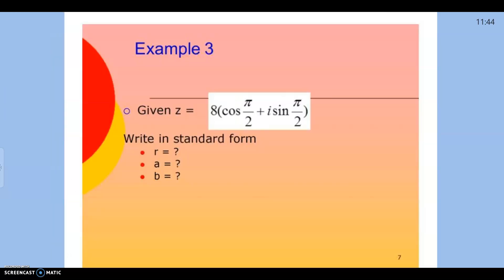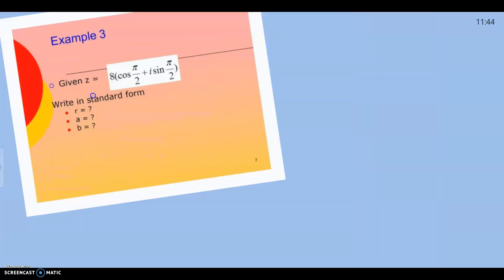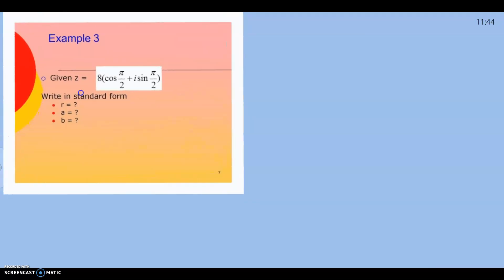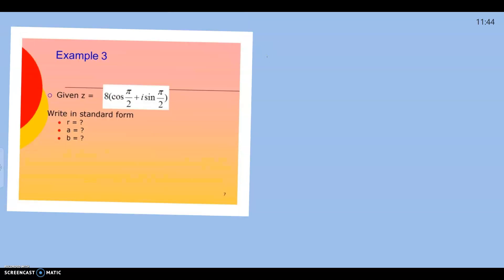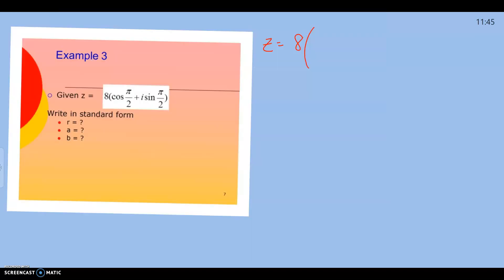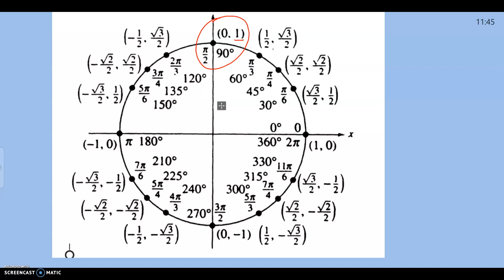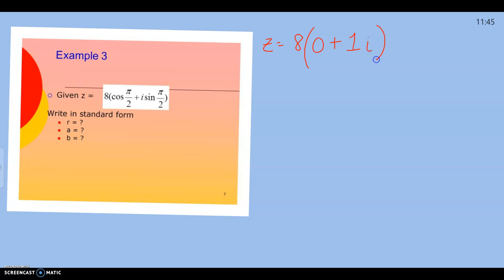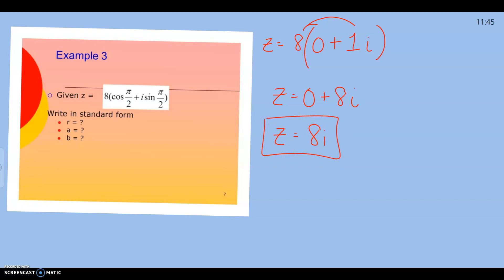Next example: 8 cosine pi over 2 plus i sine pi over 2. We do the exact same thing. R is 8, and we go to our unit circle at pi over 2. Cosine of pi over 2 is 0, and sine of pi over 2 is 1. So we distribute: 8 times 0 is 0, plus 8i. So z equals 8i.